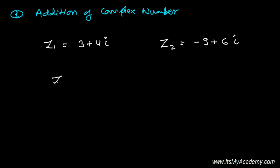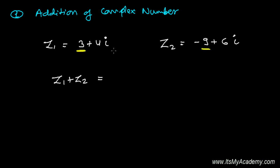So how do I add Z1 plus Z2? It's very simple. The addition of complex numbers is just like in the real number system. But here, while adding, we have to keep in mind that we add only the real part with the real part and the imaginary part with the imaginary part. That's it — this is the simple concept.